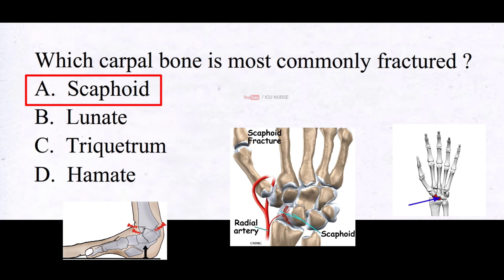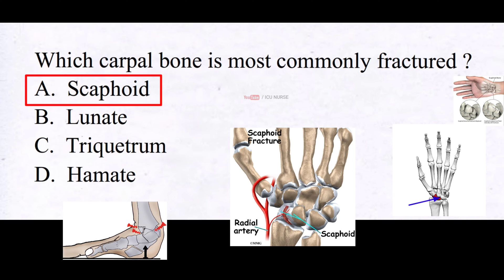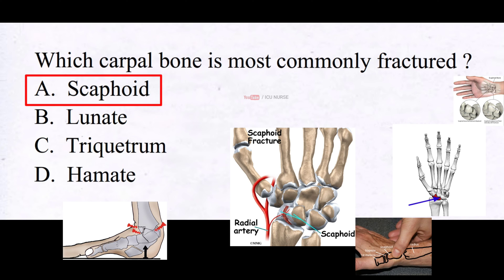The scaphoid bone has a limited blood supply, which contributes to its propensity for fractures and slow healing. Consequently, when a fracture occurs, the fracture segment may receive inadequate blood supply, leading to delayed or incomplete healing. The biomechanics of the scaphoid bone make it prone to fractures; it plays a crucial role in transferring forces between the hand and forearm during wrist movement. Its shape and articulations with other carpal bones make it more susceptible to fractures when subjected to external forces. Overall, the combination of anatomical position, mechanism of injury, limited blood supply, and biomechanical factors contributes to the scaphoid bone's higher incidence of fractures compared to other carpal bones.